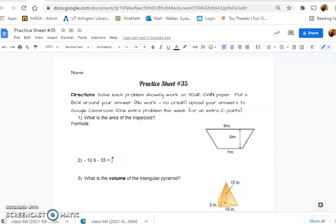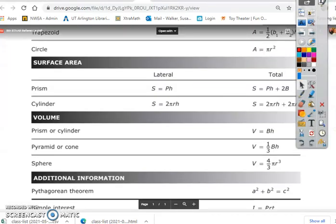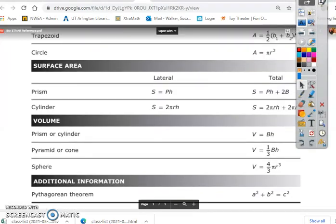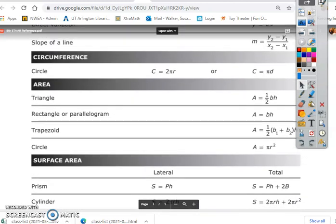Hey guys, we are going to be working on Practice Sheet 35. So let's start with looking at number one. Whether you have the 7th grade formula chart or the 8th grade formula chart, we will still see area of a trapezoid.